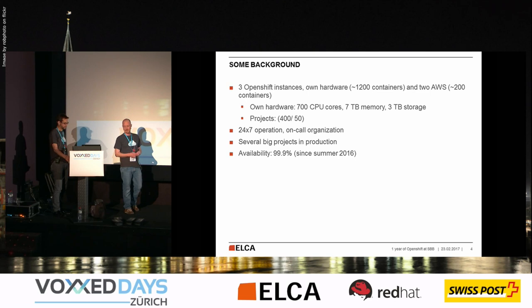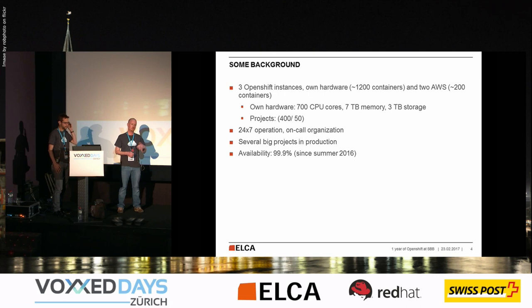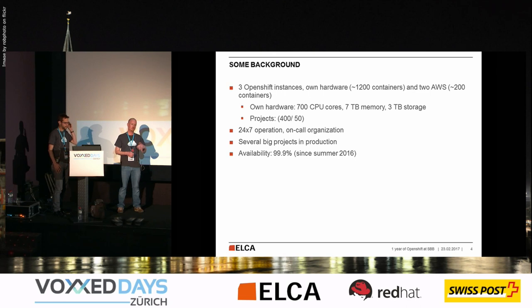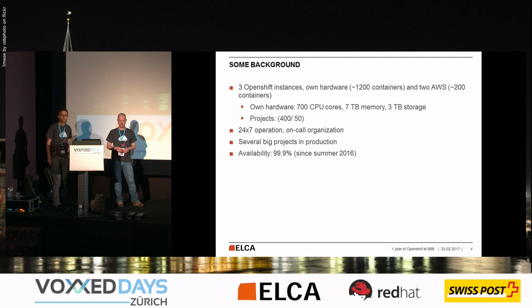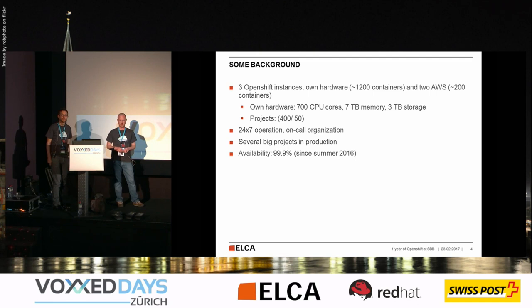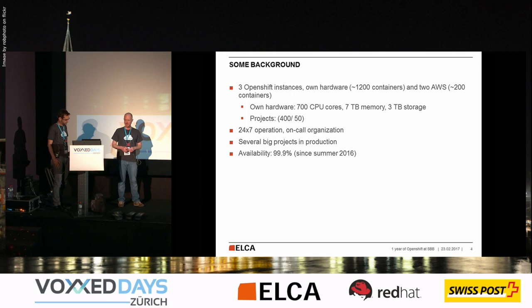To give you some background: at the moment we run three OpenShift clusters. There's one in-house cluster on our own hardware and two additional ones on AWS — one for productive usage and one for development. In total we run about 1,500 containers, though numbers are already outdated. For our in-house cluster we use about 700 CPU cores, seven terabytes of memory, and about three terabytes of storage. Numbers are increasing rapidly. On our productive in-house cluster we have about 400 OpenShift projects; on AWS it's about 50.